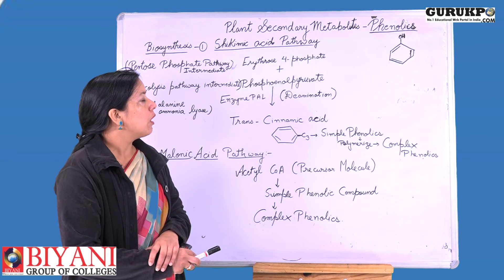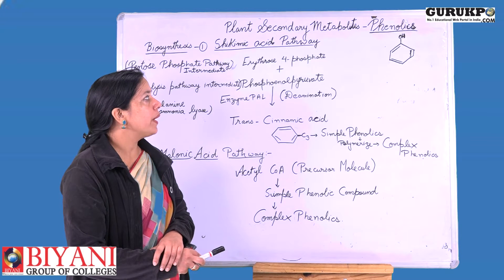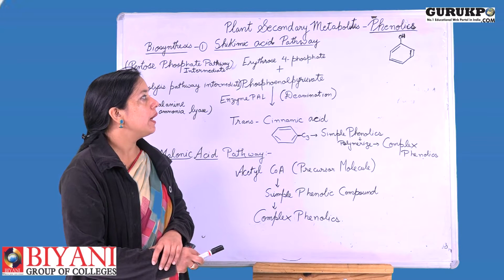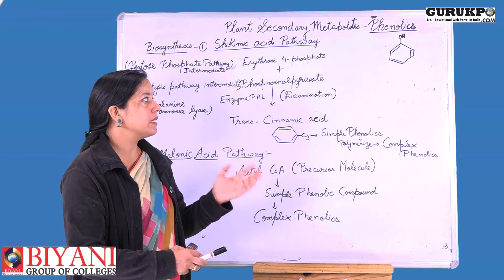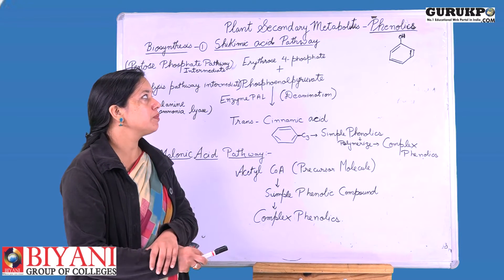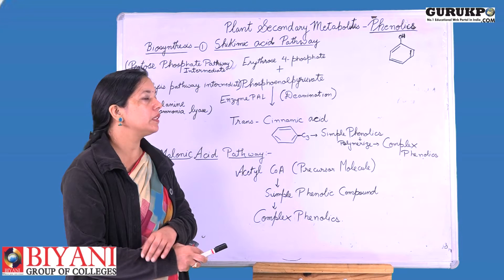The antioxidant property depends on the amount of benzene rings and phenol OH substituent groups present in them. According to the number of OH groups and benzene ring substituents present, phenolics vary in their antioxidant properties.